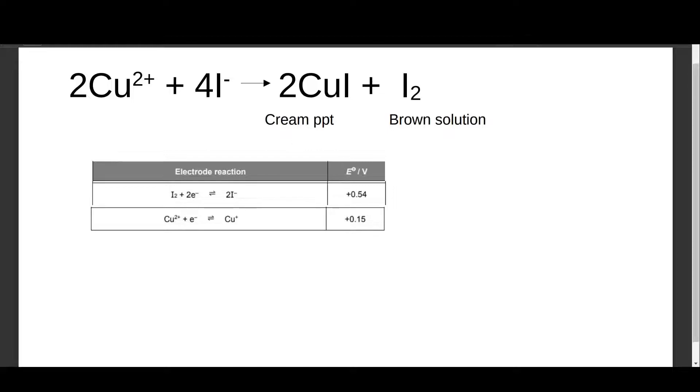If we were to find the E naught cell value of this, we will take 0.15 minus 0.54, and we get a negative value. In fact we get negative 0.39 volts, which is less than zero. Based on what we understand, when the E naught cell is less than zero, the reaction is non-spontaneous.